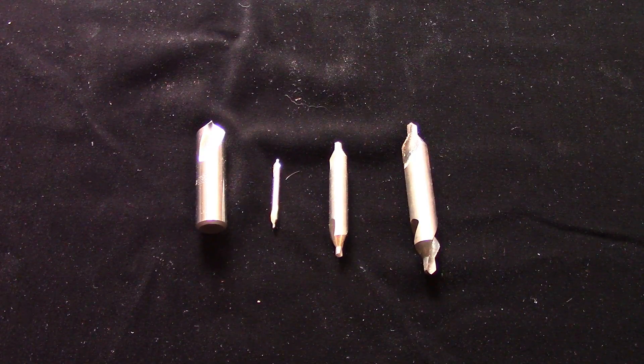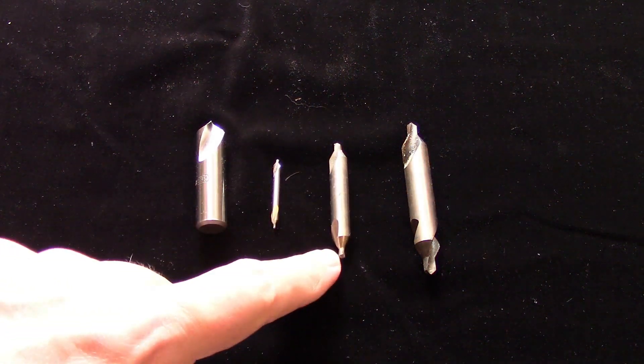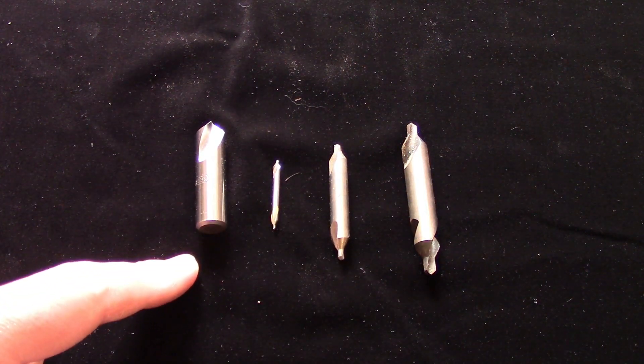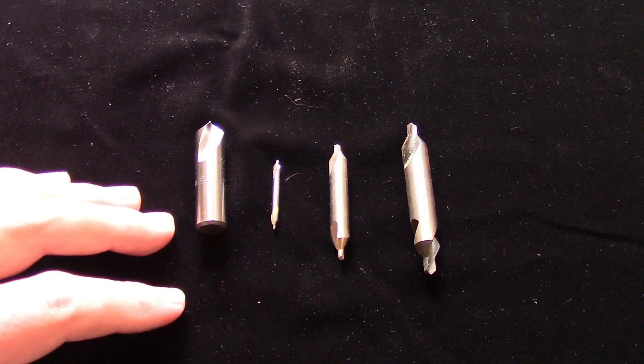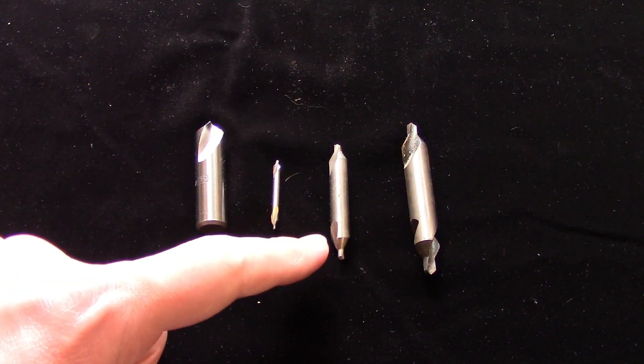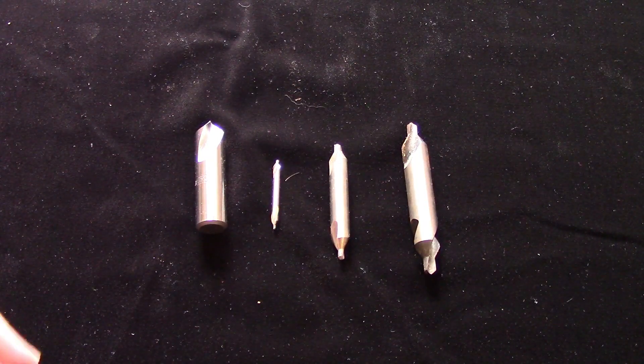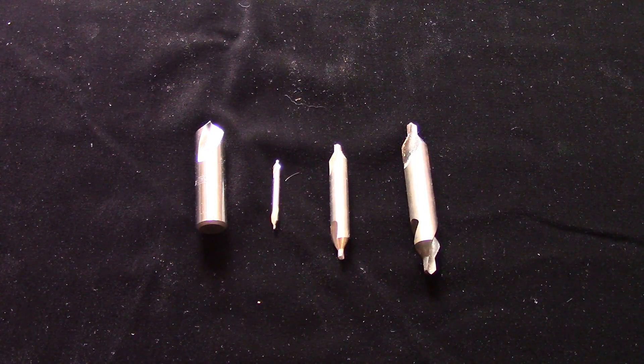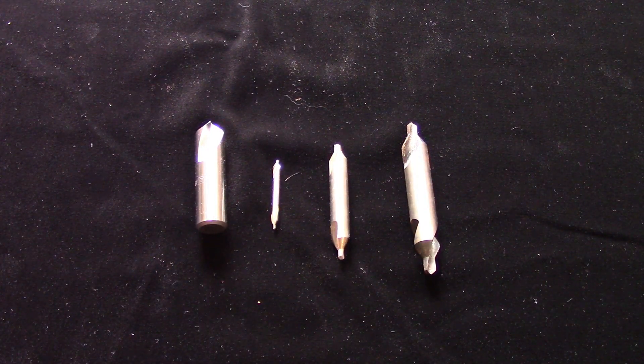There are two other types of drills that also deserve a mention: center drills and spot drills. Both can be used for spotting before drilling, but the center drill's main job is cutting a seat for the centers on a lathe. Center drills are sometimes called combined drill and countersinks in tool catalogs.